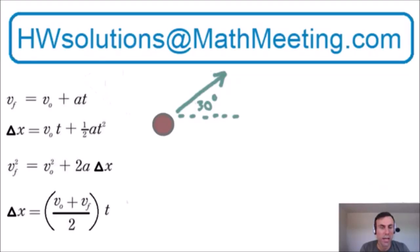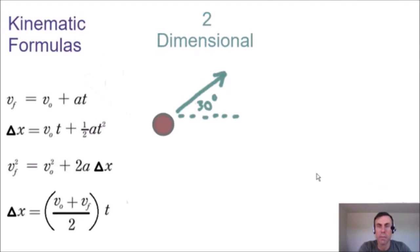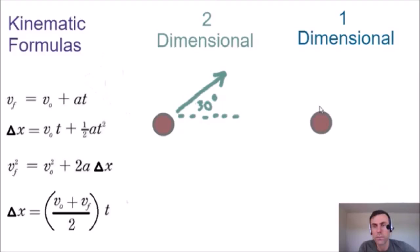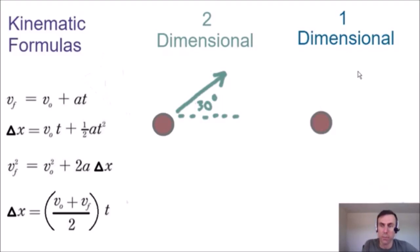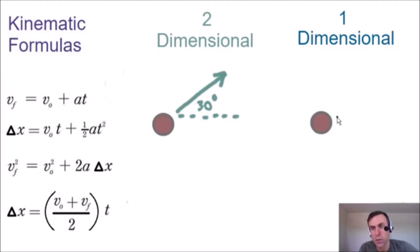Let's get started right away. The first thing I want to talk about is the difference between one-dimensional and two-dimensional kinematics or projectile motion. In one-dimensional projectile motion — which all my previous videos covered — the ball was moving either vertically up or down, or horizontally to the right or left.